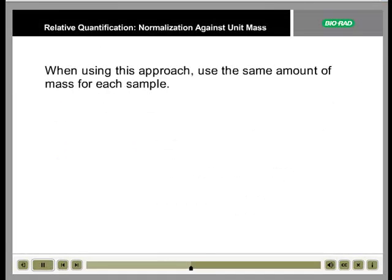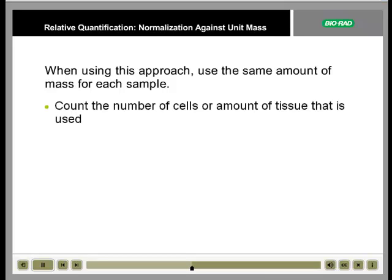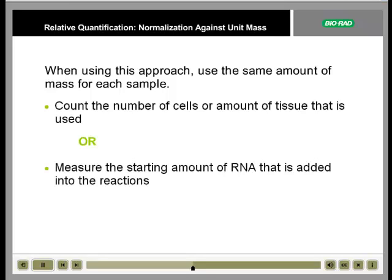When using this approach, use the same amount of mass for each sample. Carefully count the number of cells, or amount of tissue that is used, or carefully measure the starting amount of RNA that is added into the reactions.